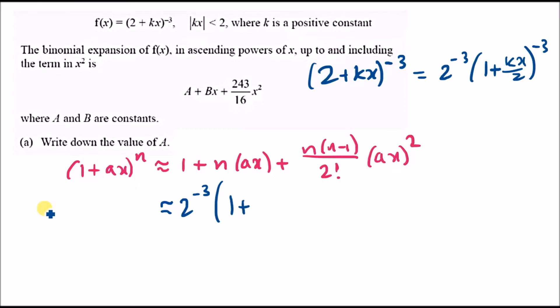So the expansion would be 2^(-3) times [1 plus n times k/2, so (-3) times (k/2)x, plus the next term (-3) times (-4) over 2!, times (k/2)^2, and so on]. First, 2^(-3) is 1/8, so everything's multiplied by 1/8.